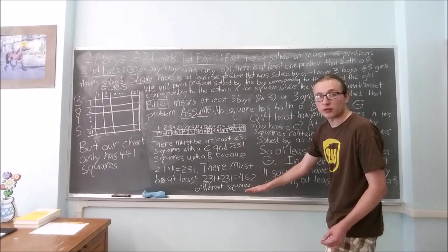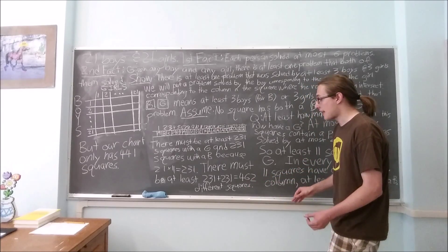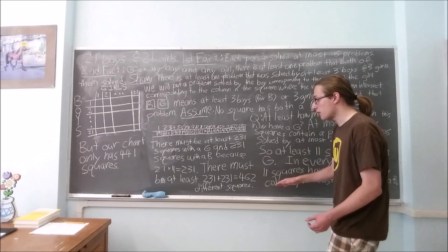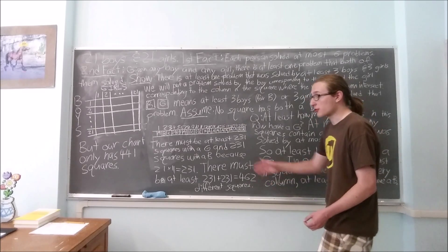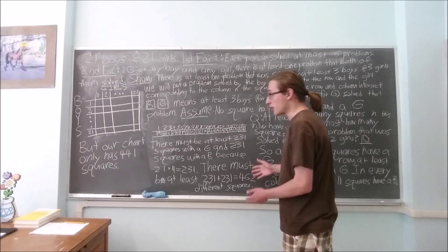231 plus 231 is 462, that means that our chart has to have at least 462 different squares. But we just calculated that our chart only has 441 squares, so we've reached a contradiction.